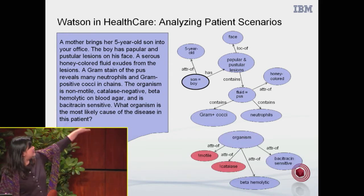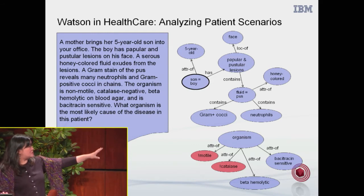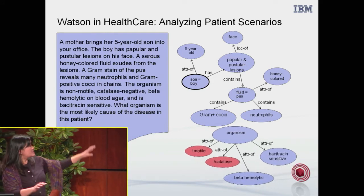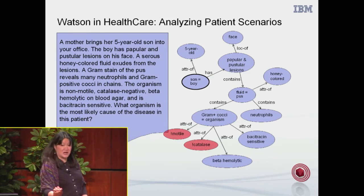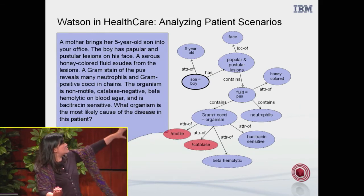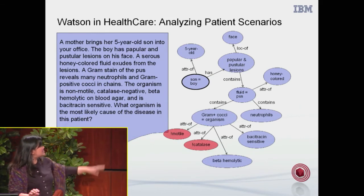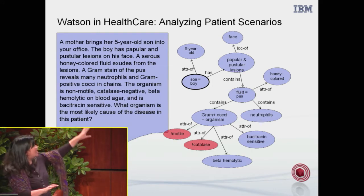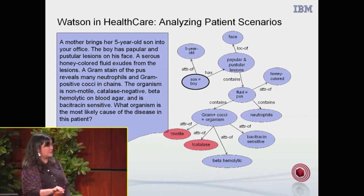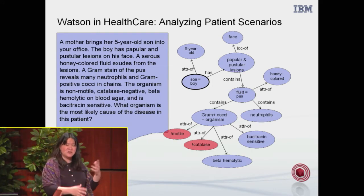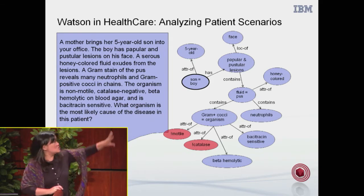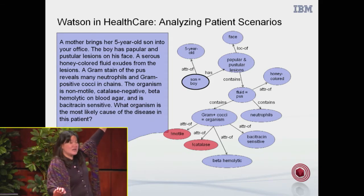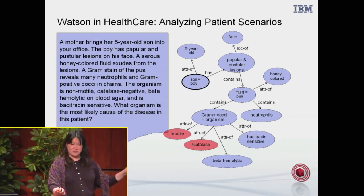Now we have the organism with all these other features, and the organism is actually talking about this gram-positive cocci. You can notice that some of these are actually negated — the organism is non-motile and catalase negative — so some are negated and some are positive. You need to be able to recognize all of these nuanced language details and put together this picture. This is how Watson understands this long description of the patient.